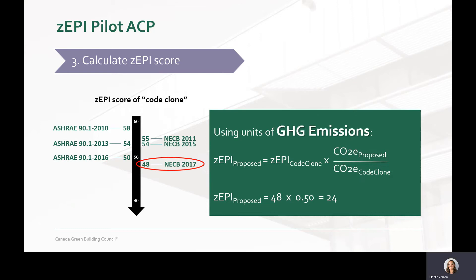Then you simply do the same calculation with greenhouse gas emissions. In this example, if the annual greenhouse gas emissions of the proposed design emits half of the greenhouse gas emissions of the code clone, you therefore take 50% of 48 and the resulting ZEPI score of the building using greenhouse gas emissions is 24.